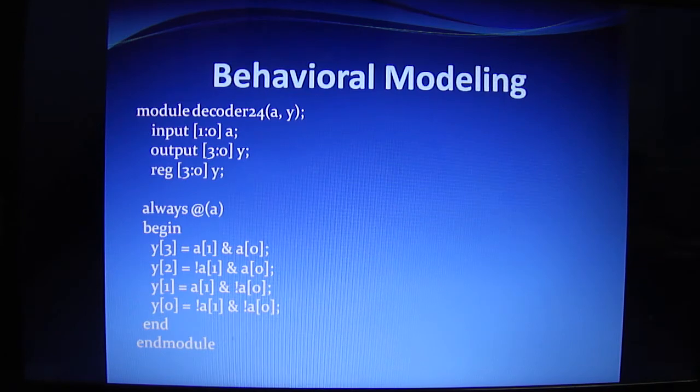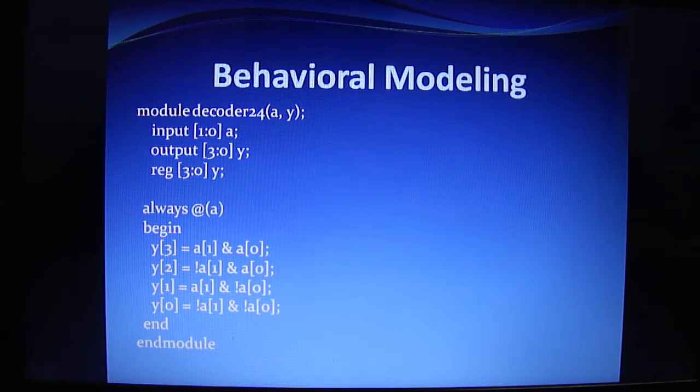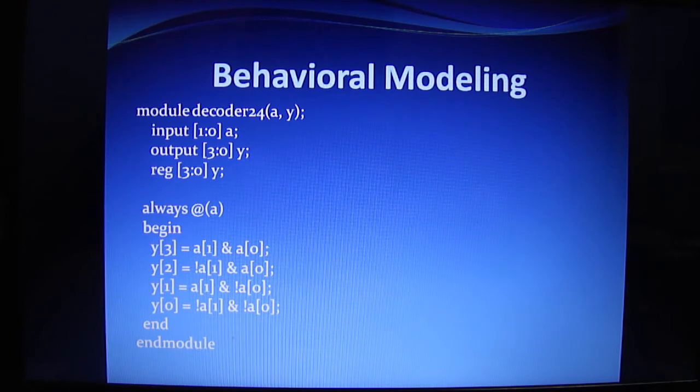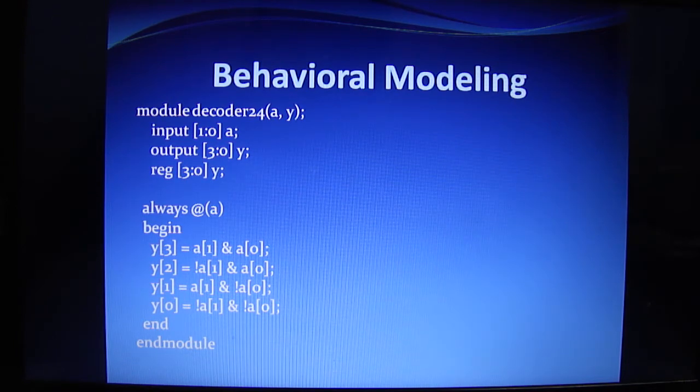Now, here is the Verilog code for a 2-4 decoder using behavioral modeling style. Here we are defining a module named decoder2to4, and we are defining the input and output.